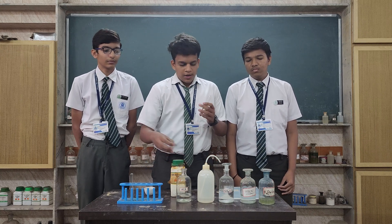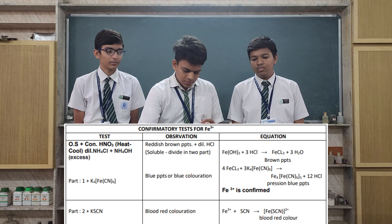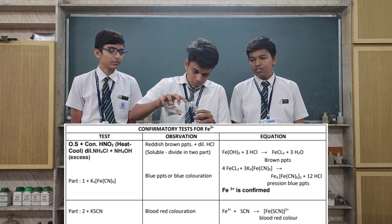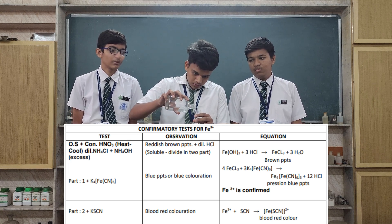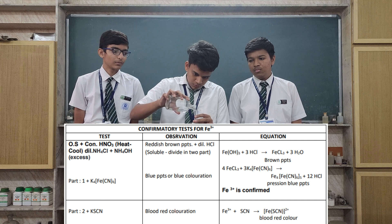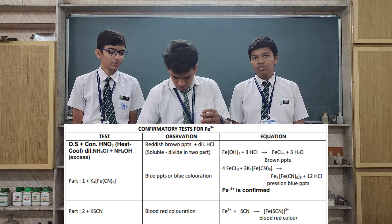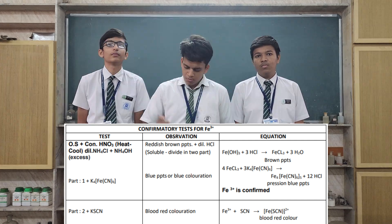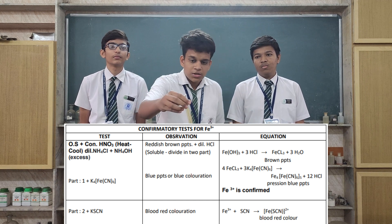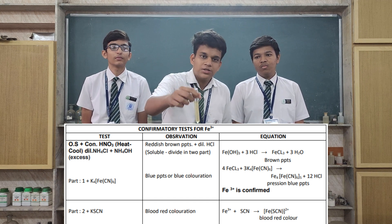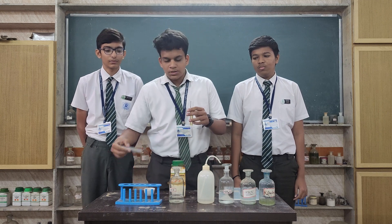Now dissolve the precipitate in NH₄Cl. As you can see, the precipitate is completely dissolved. Now divide it into 2 parts.